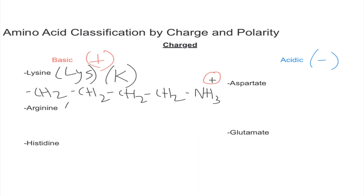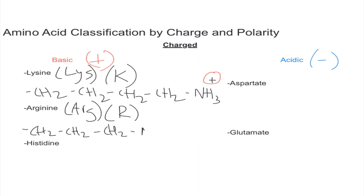Arginine is abbreviated ARG with one-letter R — A is already taken by alanine. Arginine has what we call a guanidinium group: a three-carbon chain of CH2-CH2-CH2, followed by a nitrogen, then a central carbon flanked by two more nitrogens. This guanidinium group carries the positive charge, making arginine basic.